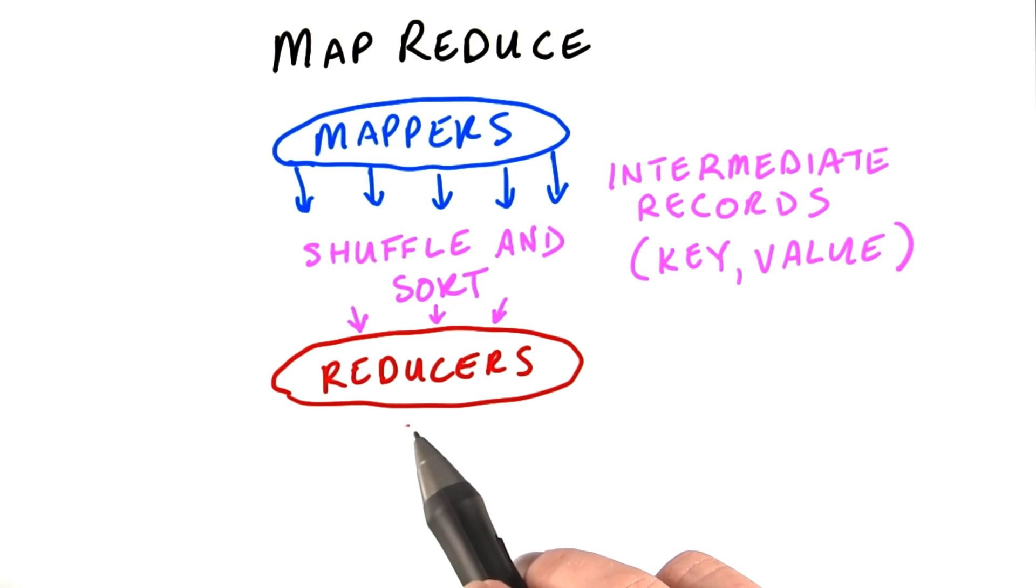Finally, each reducer works on one set of records at a time, or one pile of cards. It gets the key, and then a list of all the values.